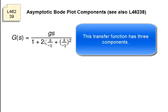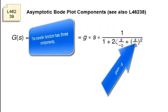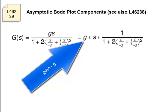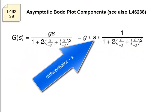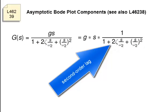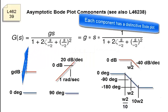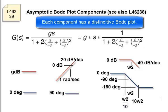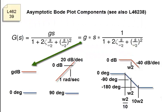This transfer function has three components: a gain component, a differentiator component, and a second order lag component. Each component has a distinctive Bode plot. There's the gain Bode plot, the differentiator Bode plot, and the second order lag Bode plot.